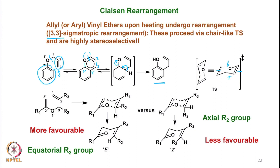If we look at the transition state with substituents in non-aromatic substrates, we can see that the R2 group in one case is equatorially oriented and in the other is axially oriented, while the rest remains the same. The transition state where the R2 group is equatorially oriented is definitely more favorable. What is referred to as E geometry here is R2 versus this particular group; Z geometry has R2 on the other side. The equatorial arrangement is more favorable, and we will look at this in a little more detail.